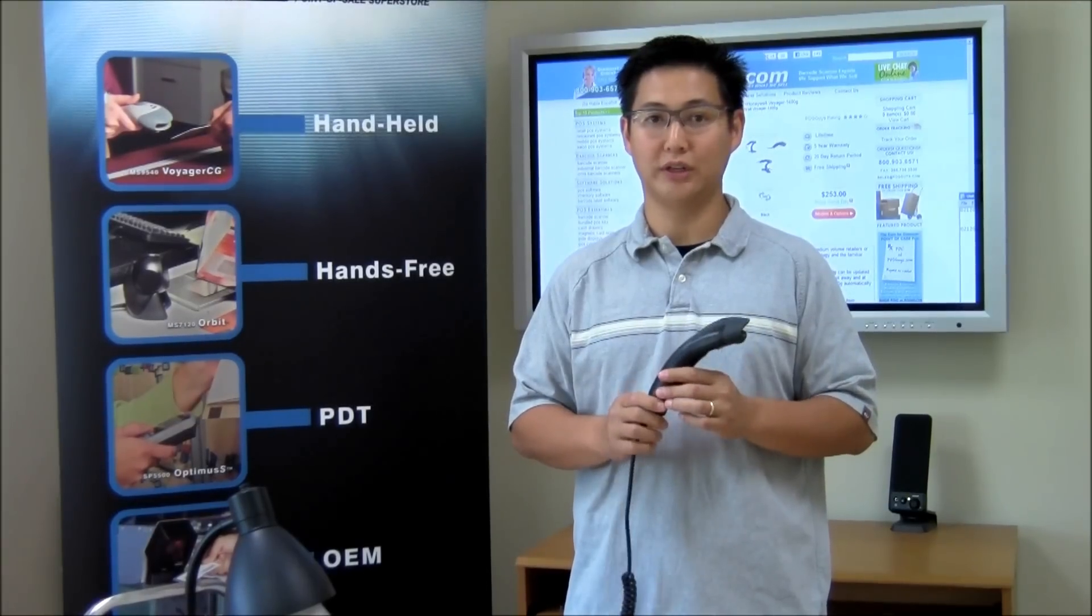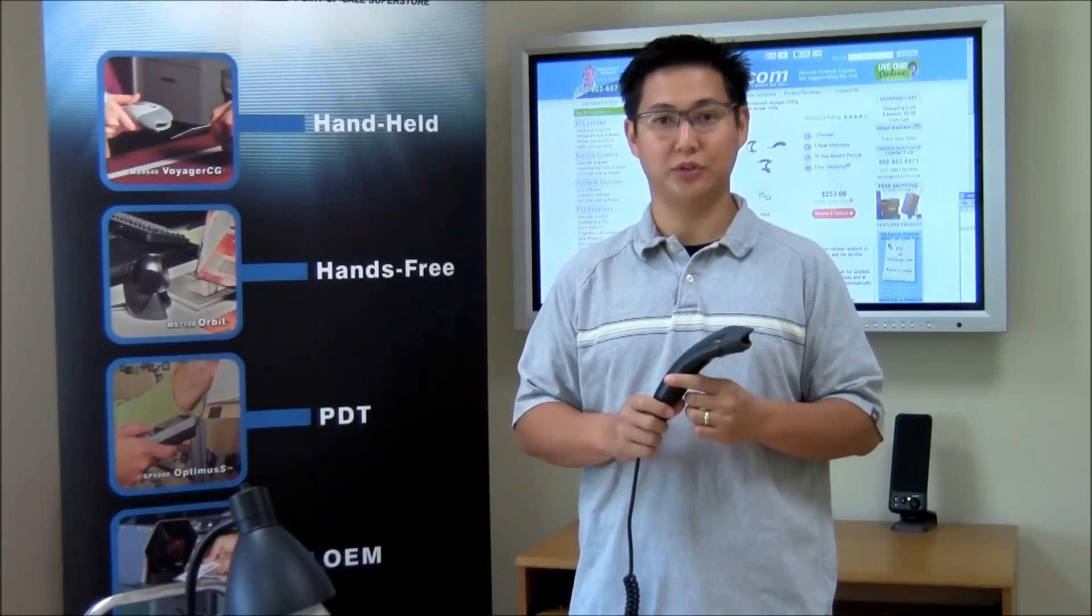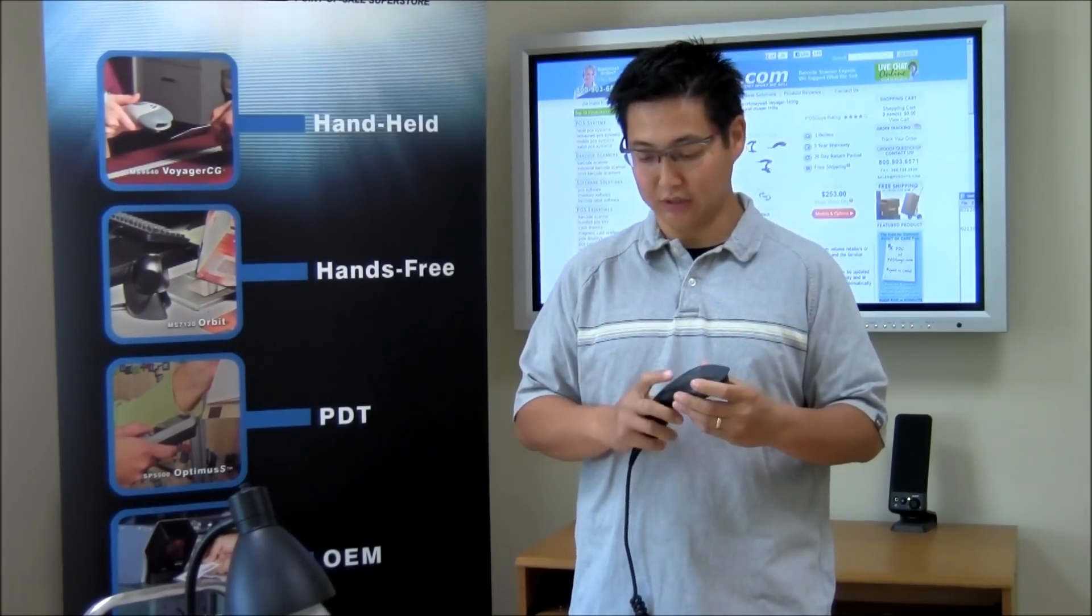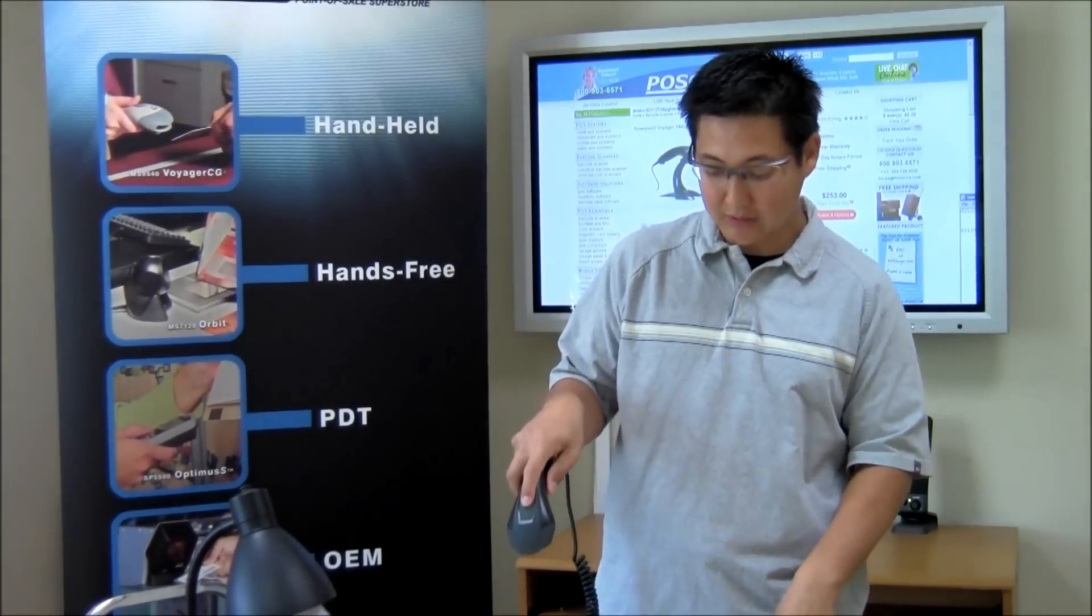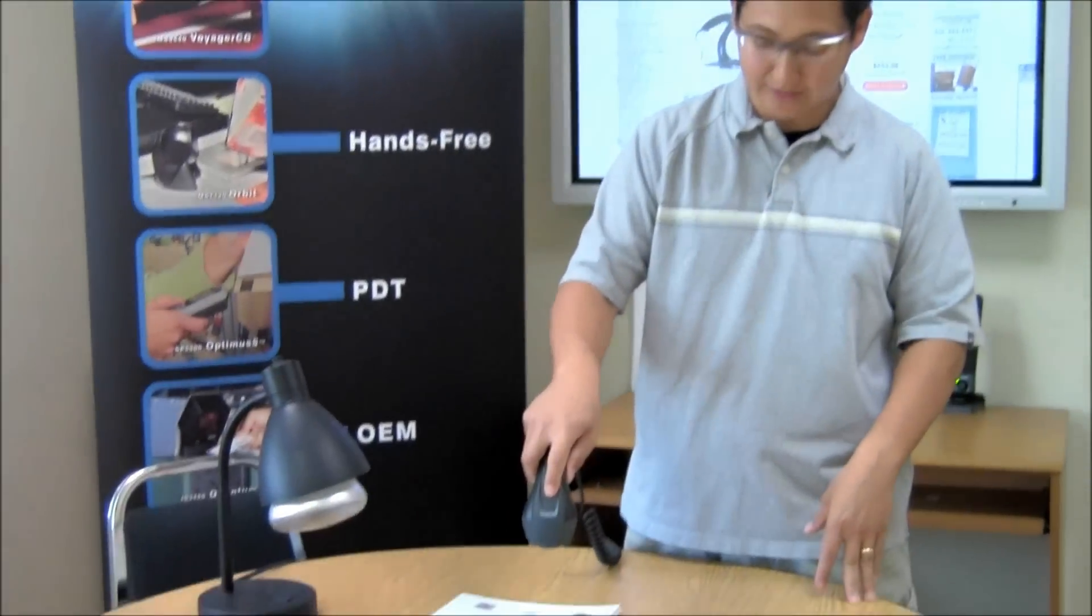This Voyager is available in a 1D model, a PDF417 capable model, and a full 2D capable model. With the imaging technology, you get the ability to scan different types of barcodes. You also get the ability to scan at different angles.